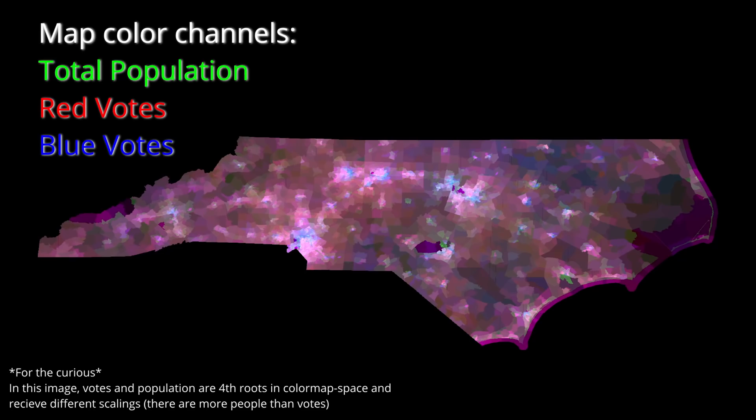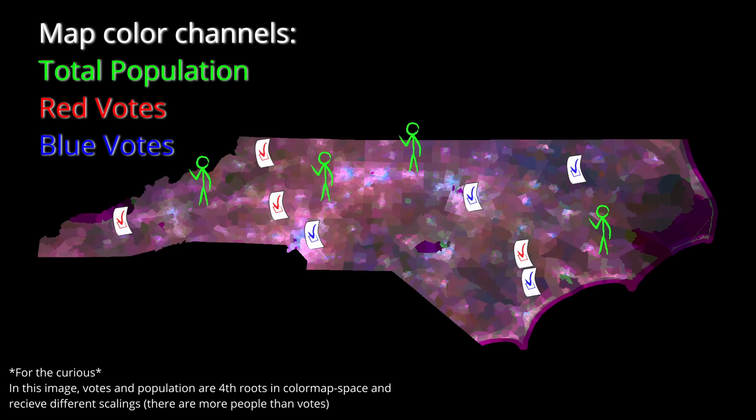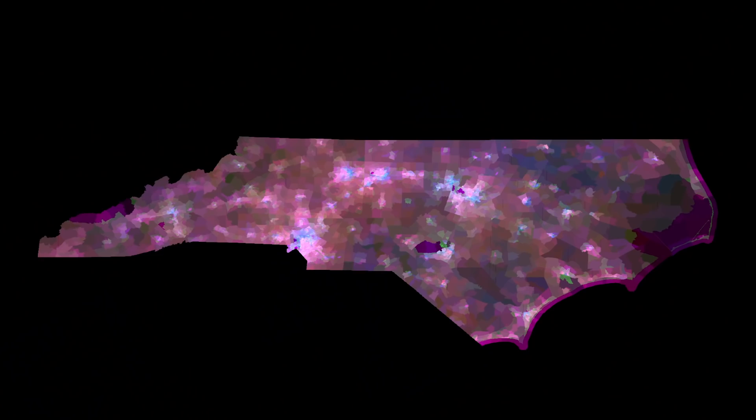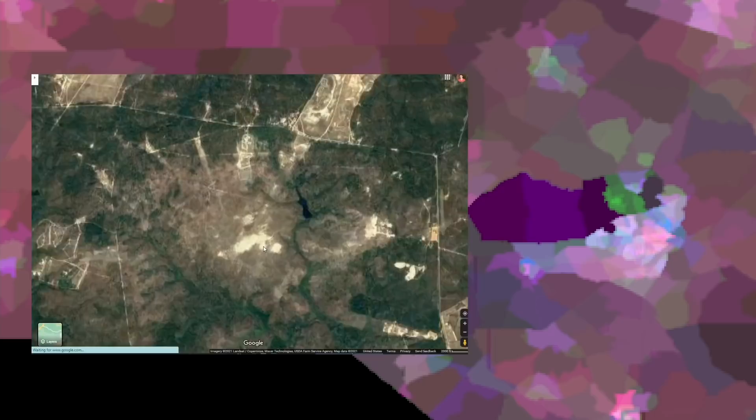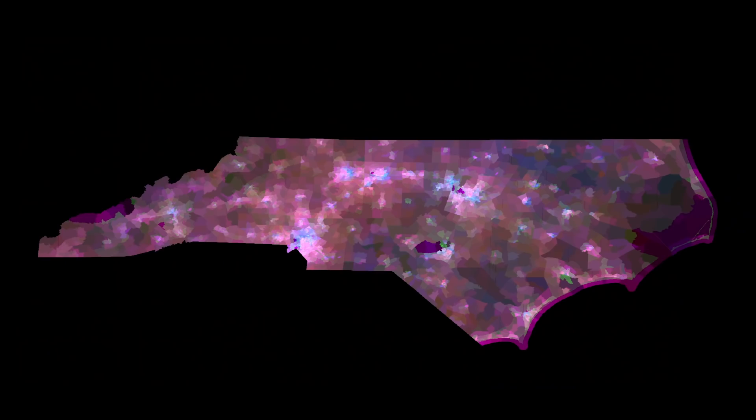Now we have a complete picture of where people, red votes, and blue votes live in North Carolina. There are a few discrepancies — like how the mortar range at Fort Bragg has nobody living in it, but it's within a voting precinct, so technically it's just a big field full of craters with ballots in them but no people. The open ocean is the same way. But in both cases it's not enough of an issue to spend another week's worth of evenings fixing the mortar range voter anomaly.